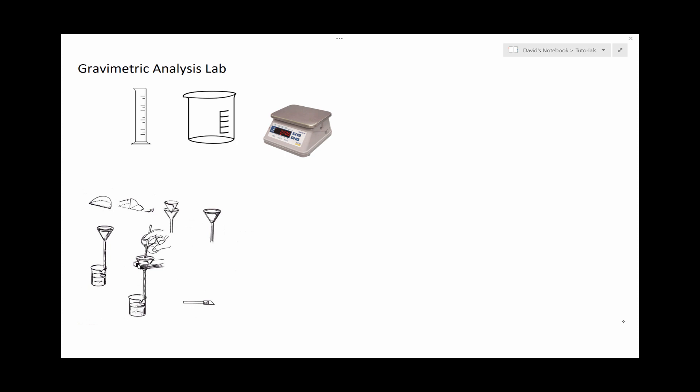In this video, we'll be going over the gravimetric analysis lab. What we'll be doing is trying to determine an unknown group 1 metal carbonate. We don't know what this is. We do know that there's a 2 there, since we know that it's some metal from group 1.